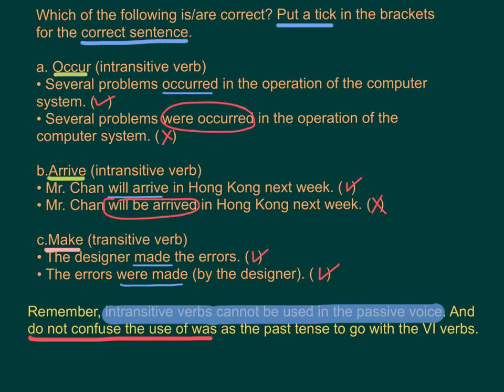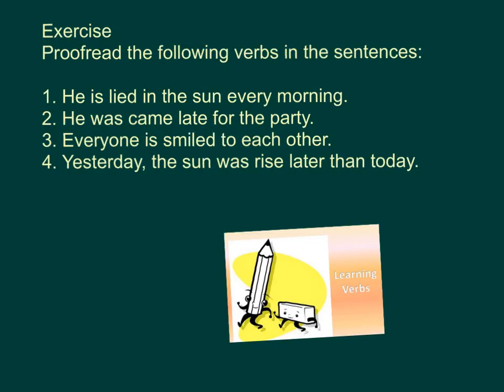Remember: intransitive verbs cannot be used in the passive voice, and do not confuse the use of 'was/were' as a past tense marker with VI verbs. 記住，不及物動詞是不會用被動式的。還有記住，不要將was/were當是一個past tense來用在VI的句子裡面。Now, do the exercise to test yourself. Bye!